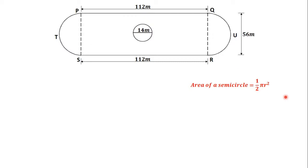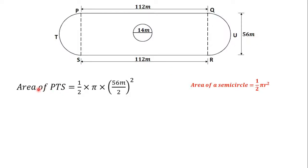Let's begin with the area of the semicircle PTS. We know that the area of a circle is πR². Since a semicircle is half of a circle, the area of a semicircle is ½ × πR². The diameter of PTS is 56 meters, so the radius is 56 ÷ 2. The area of PTS equals ½ × π × (56 ÷ 2)², which gives us 1231.50 meters squared. So this is the area of the semicircle PTS.